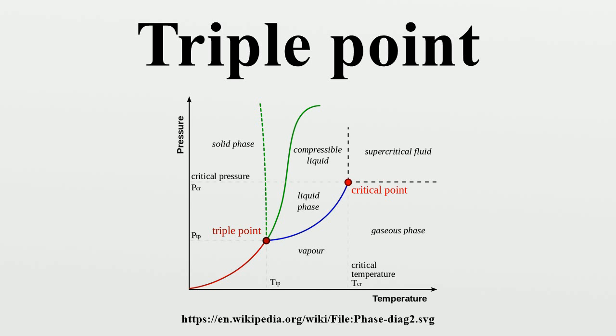Above the triple point, solid ice when heated at constant pressure first melts to form liquid water, and then evaporates or boils to form vapor at a higher temperature.